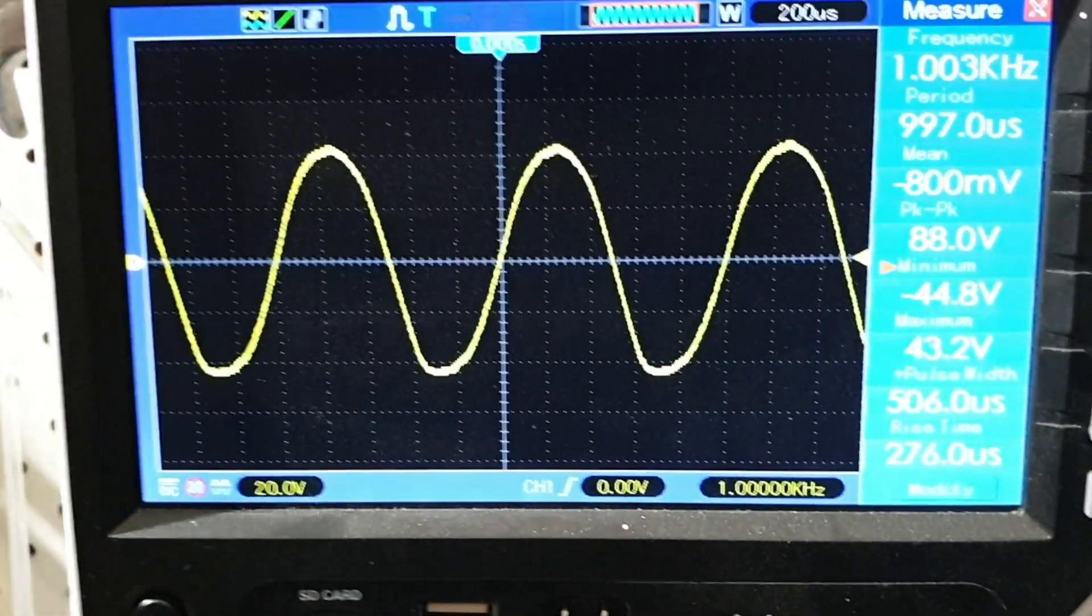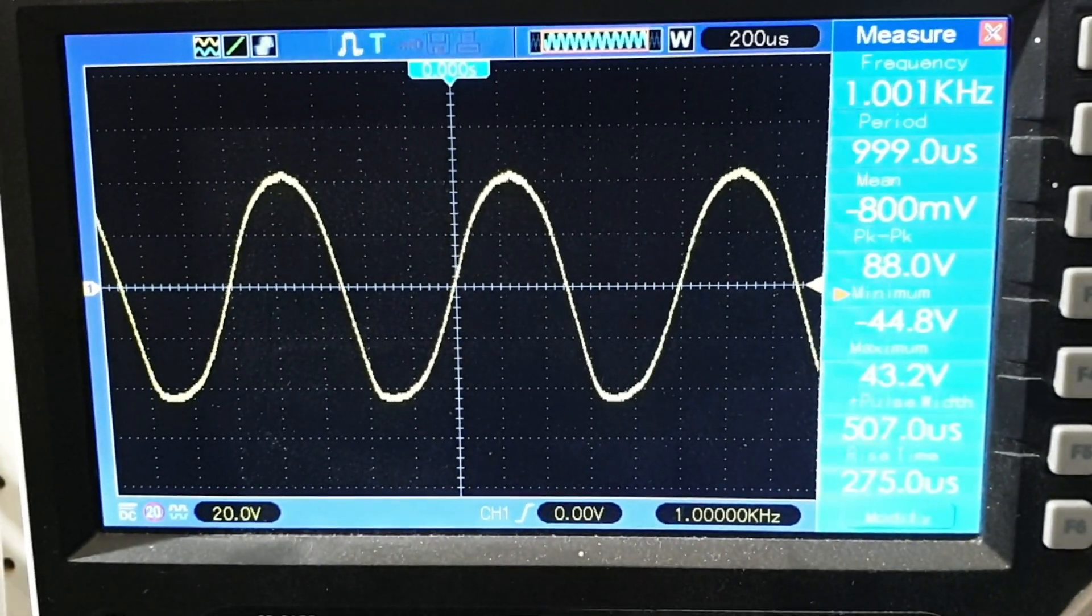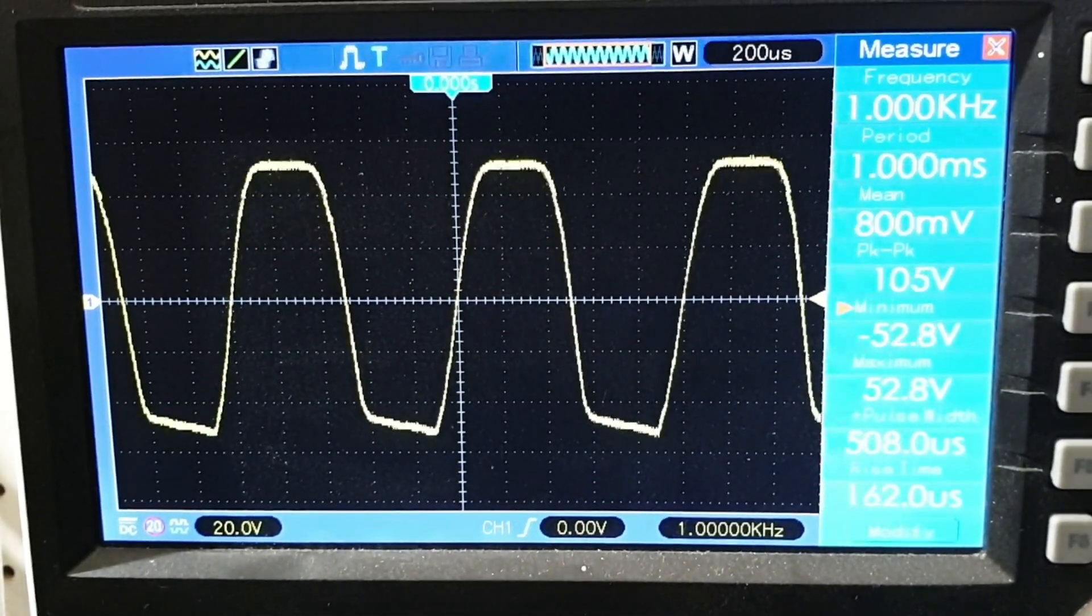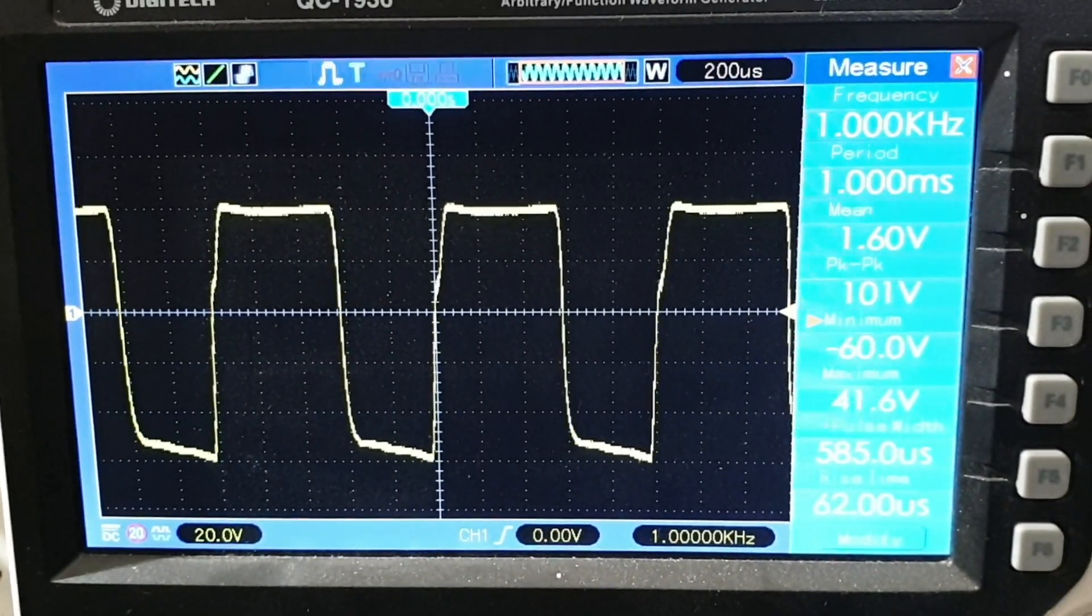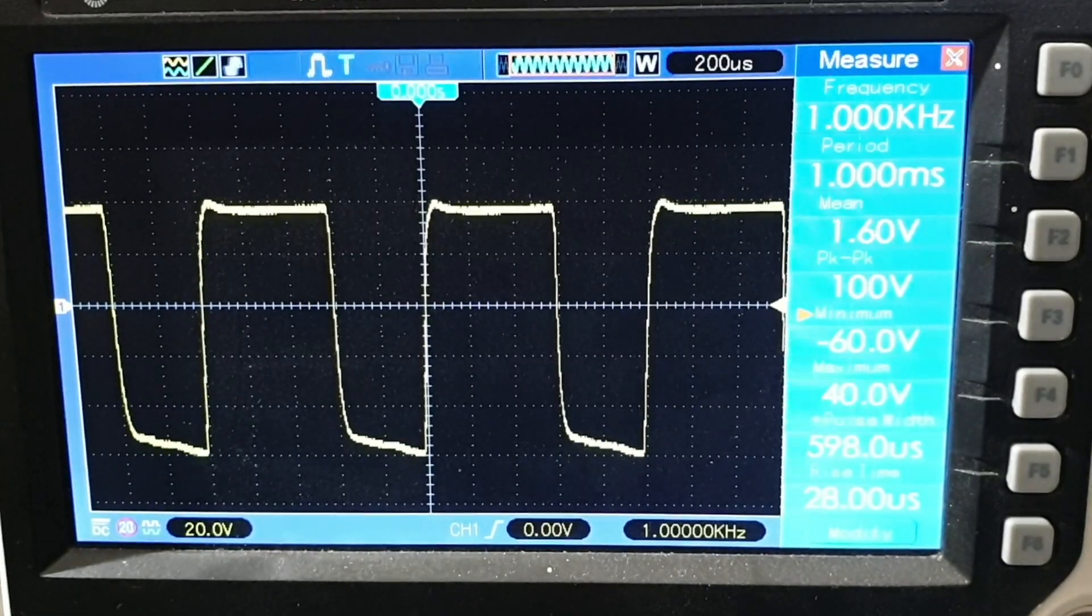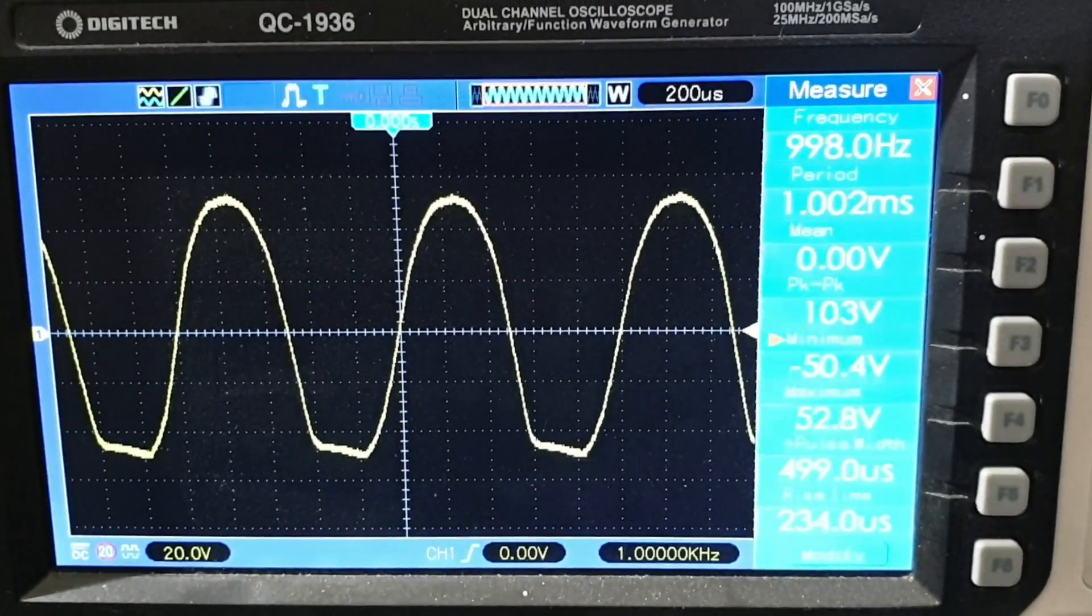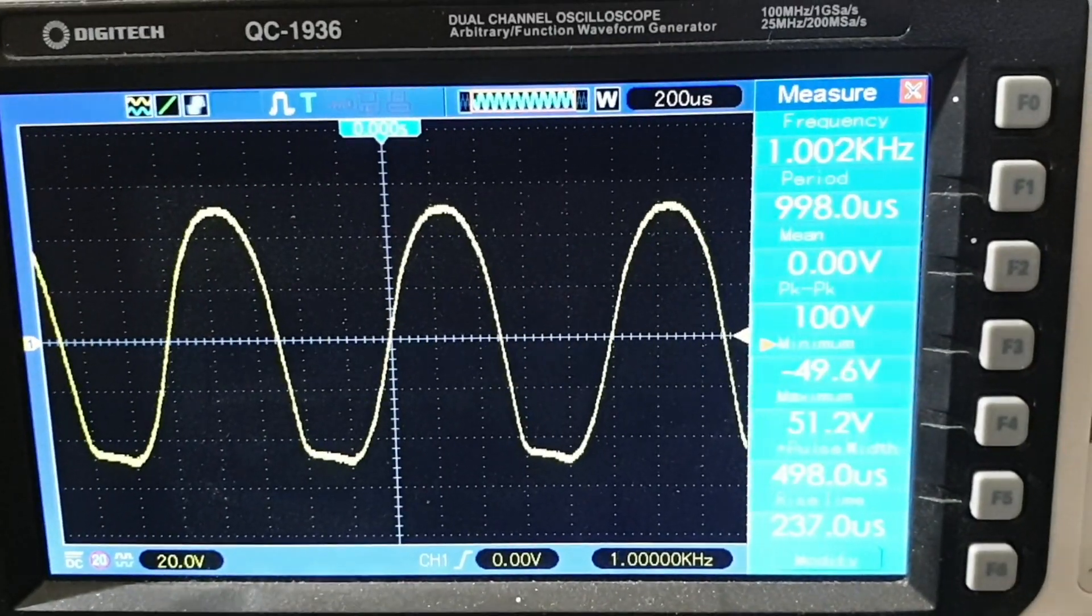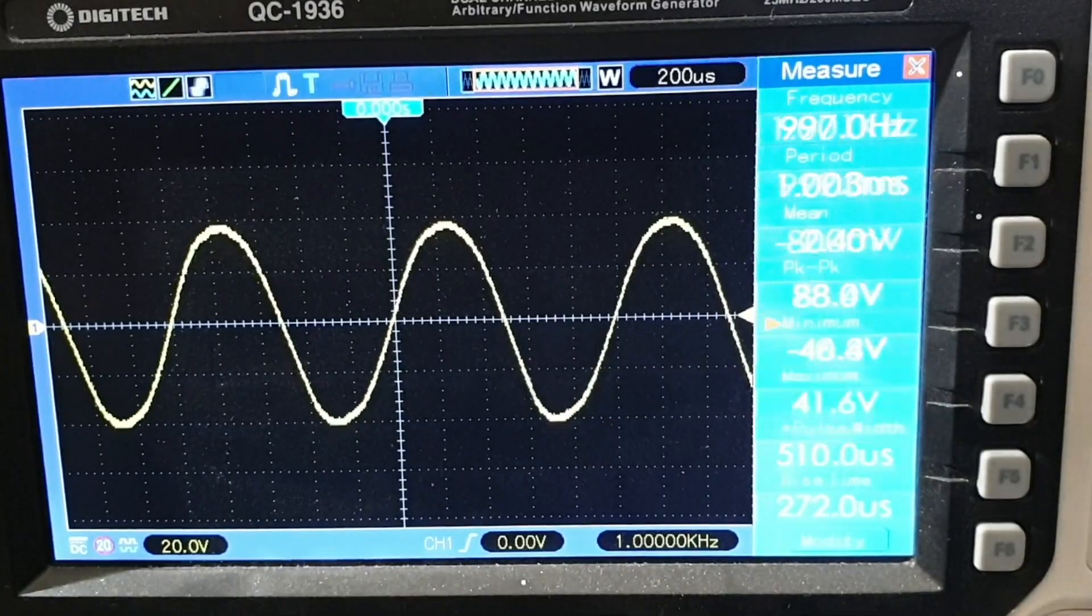And so what we're seeing at the entry to the tone stack after the cathode follower, as you can see, an 88 volt peak to peak signal. Now, if I bring the gain up, this is obviously on the dirty channel of the 800. If I bring the gain up, you'll see the wave clips. So we're starting to see compression and distortion at that point in the amp. I'll bring it back down. So you can see it's starting to square off there at 100 volts peak to peak.